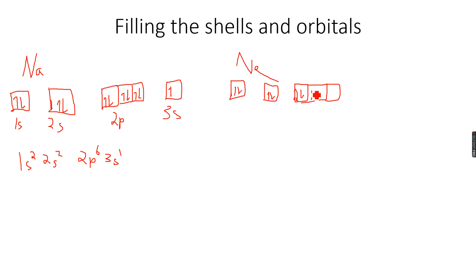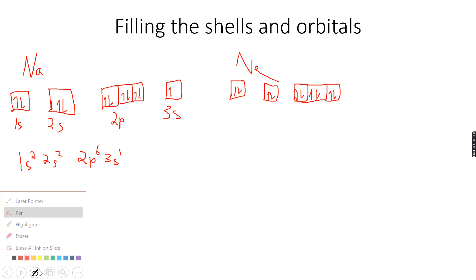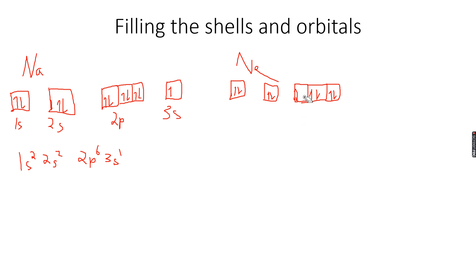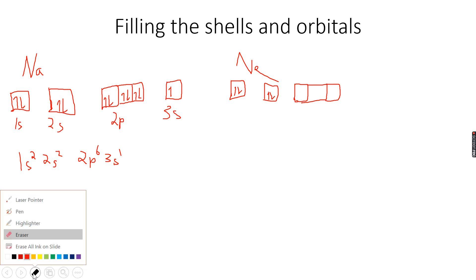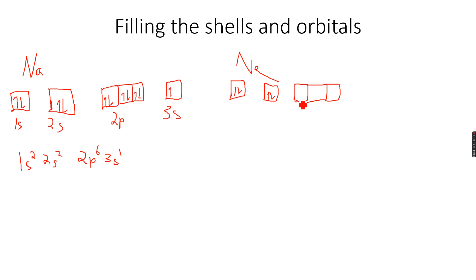I have to do it the correct way — I know all of neon's orbitals are full, so it doesn't really matter here, but I must always follow the correct method: first fill all orbitals singly, then start pairing them up. So it goes like this: 1s, 2s, 2p.